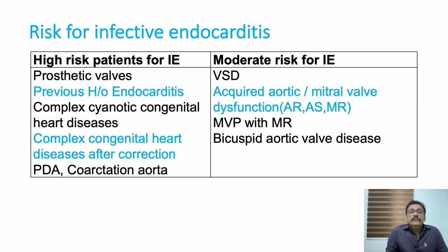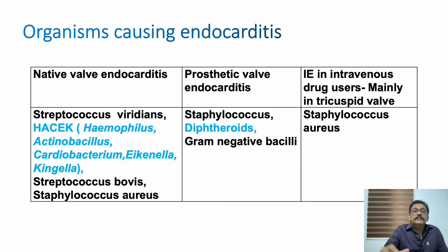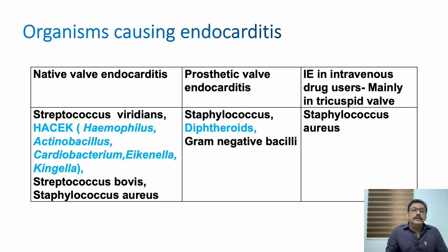Moderate-risk conditions for infective endocarditis are VSD, acquired aortic and mitral valve lesions like AR, AS, and MR. MS has a very rare incidence. MVP can be a risk factor if the patient develops mitral regurgitation. Bicuspid aortic valve also sometimes develops infective endocarditis.